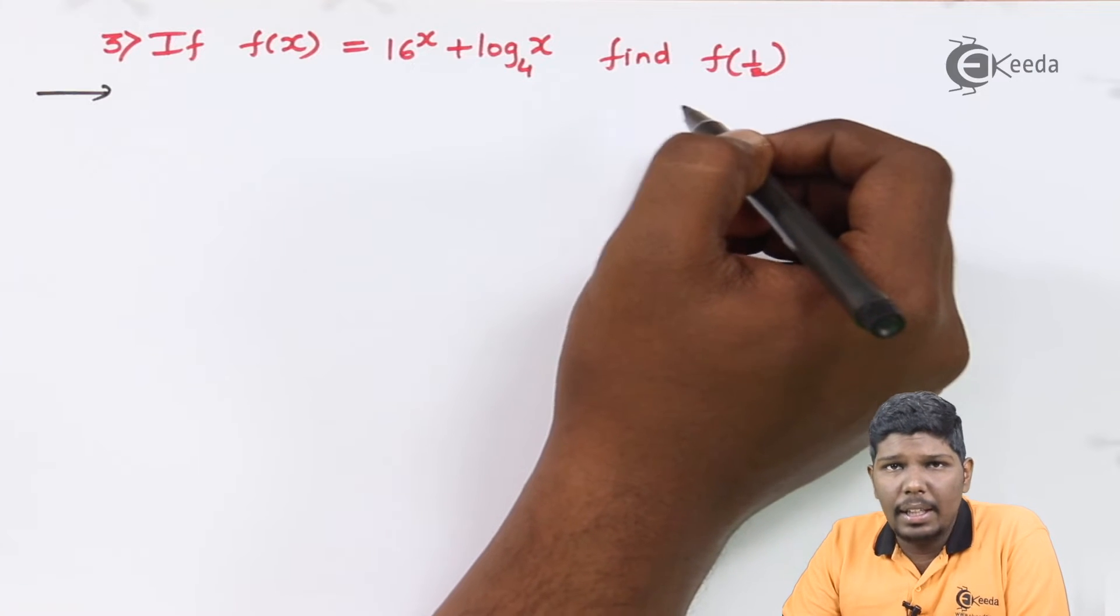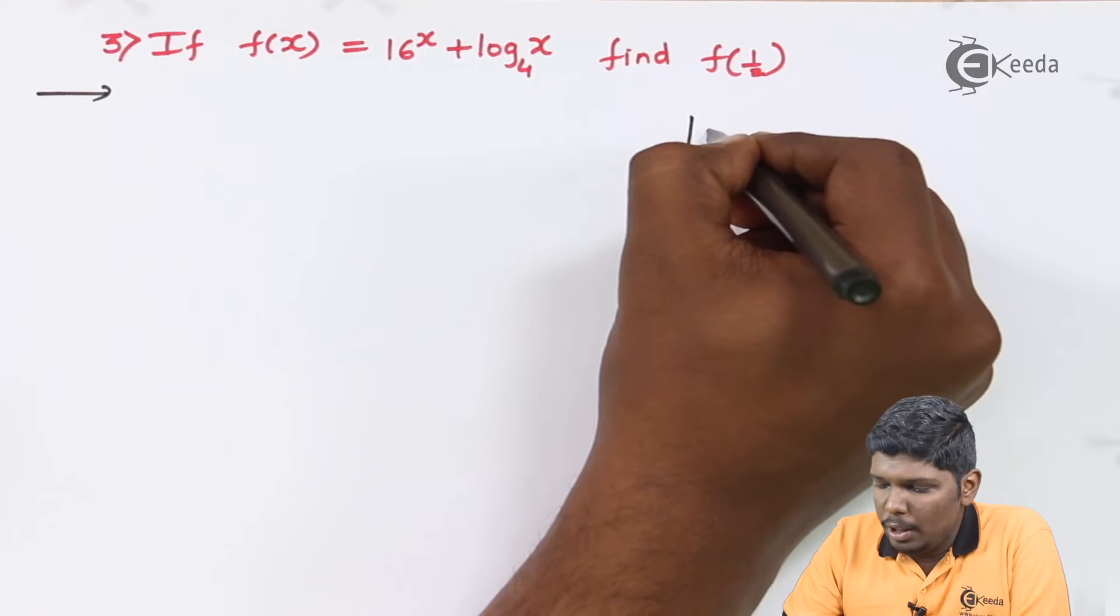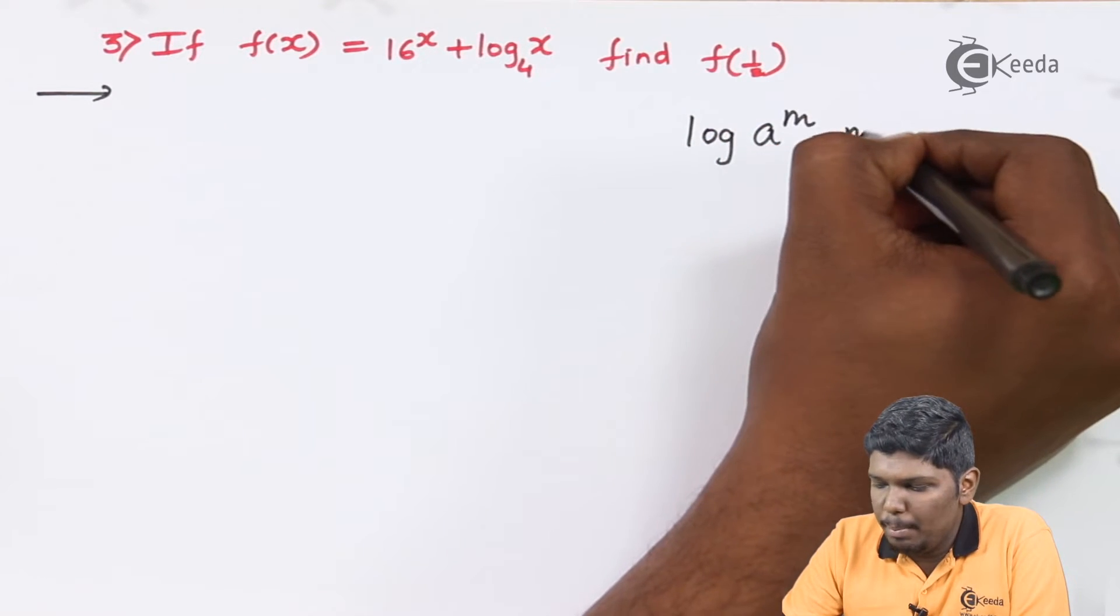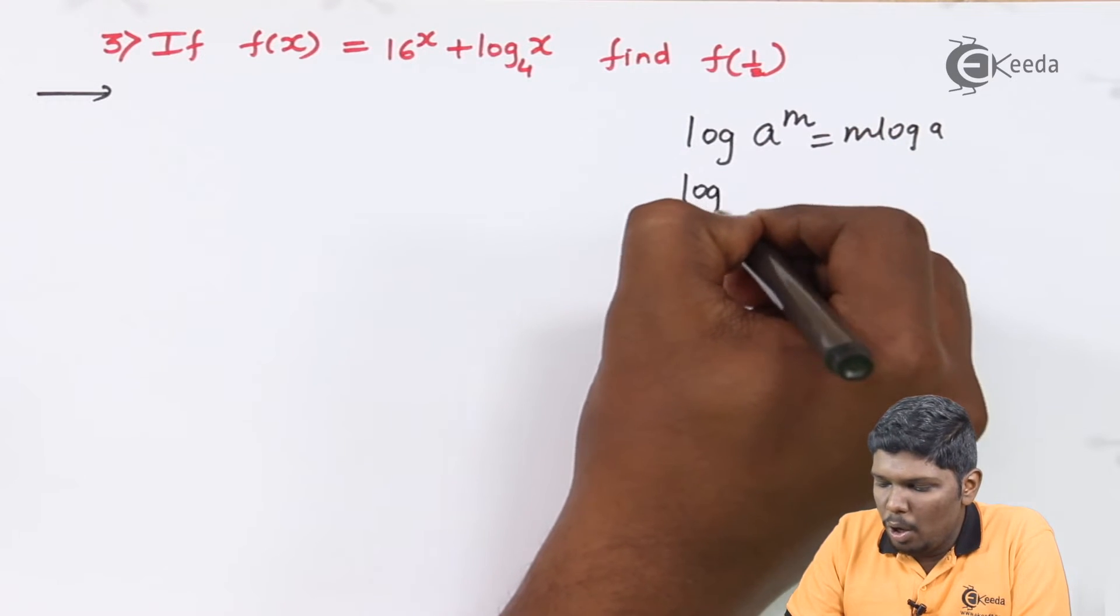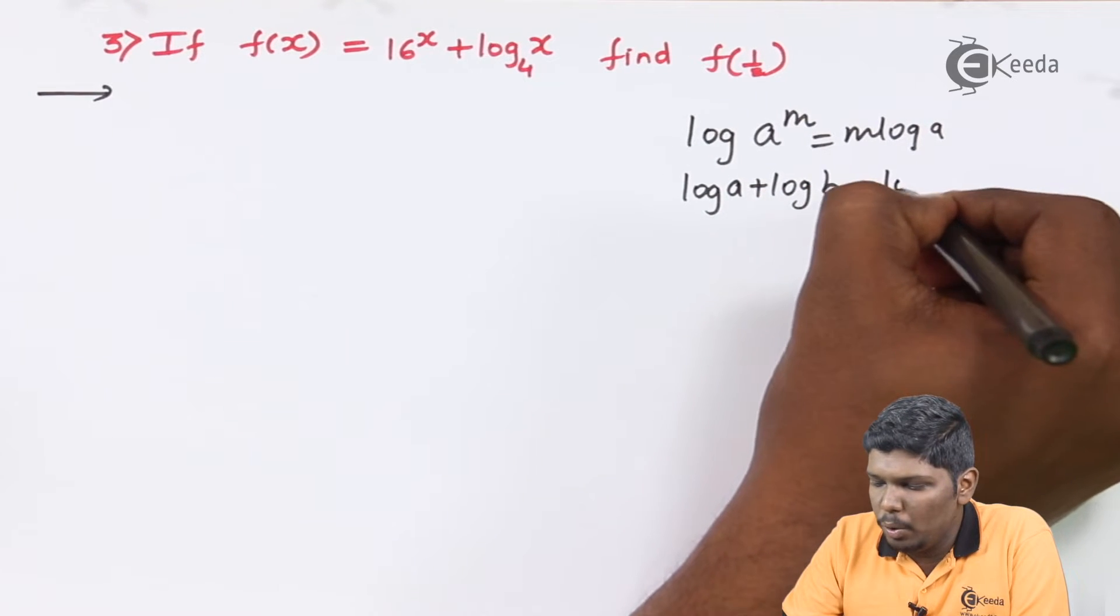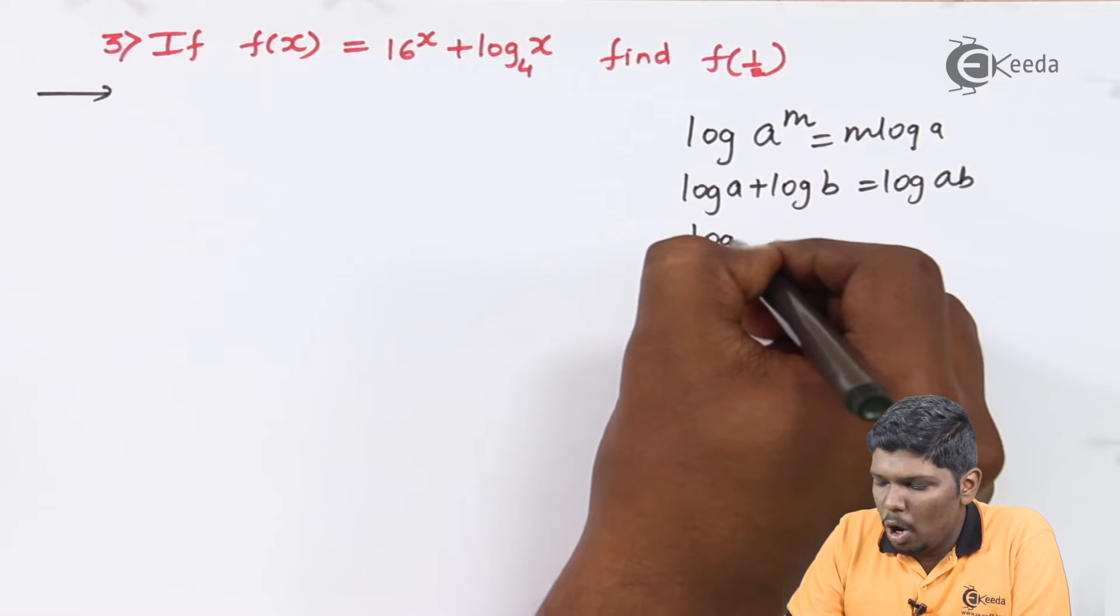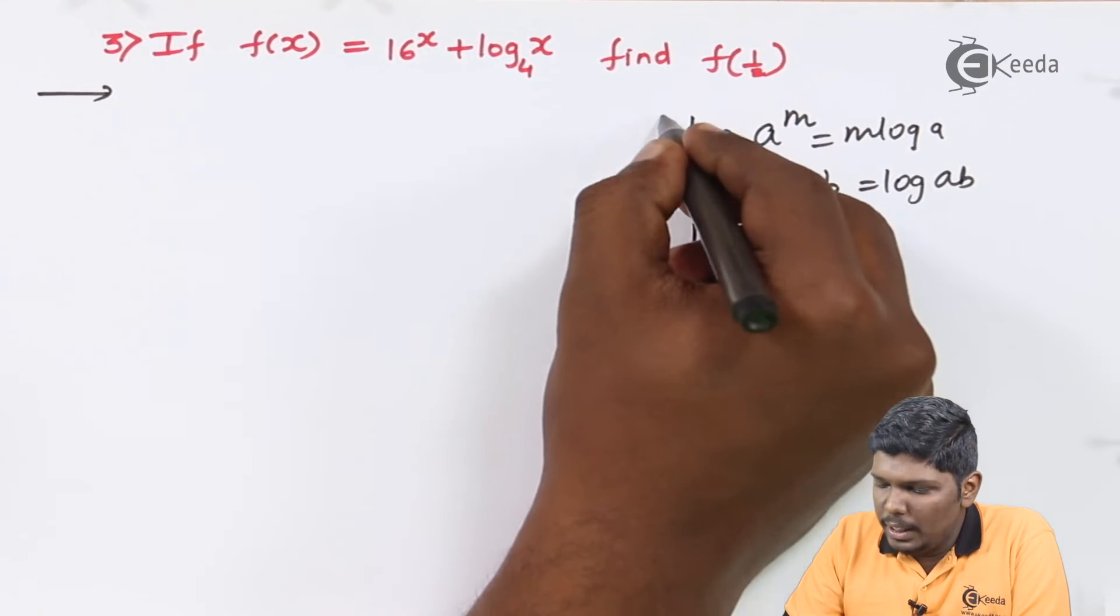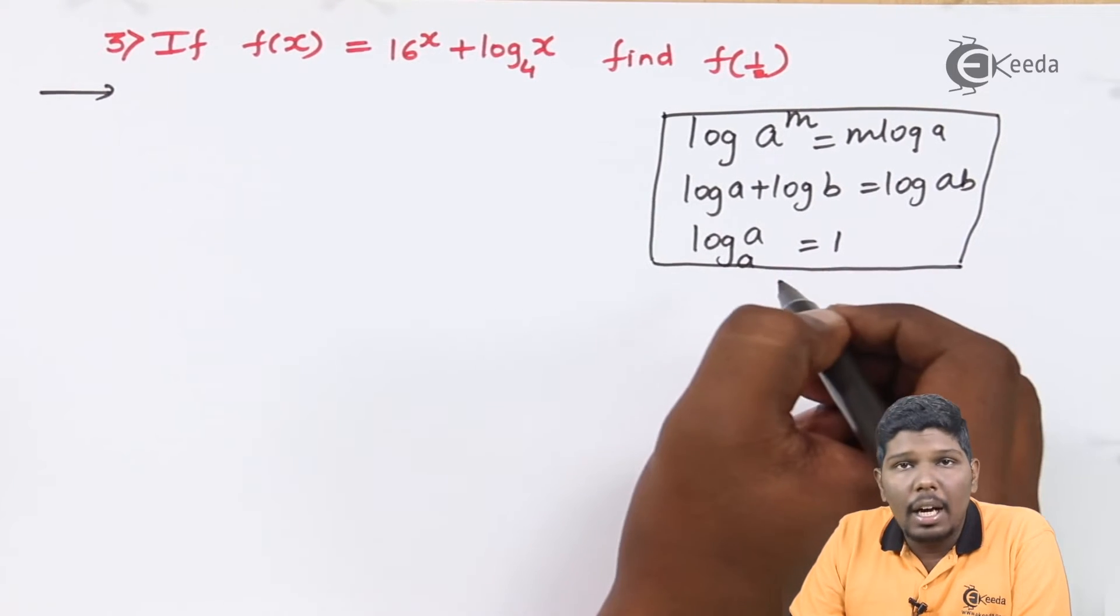we need some basic properties related to logarithm. First property: log of a raised to m equals m log a. Second: log a plus log b equals log ab. And last: log a to the base a equals 1. These are the three basic properties we will require in the coming problems.